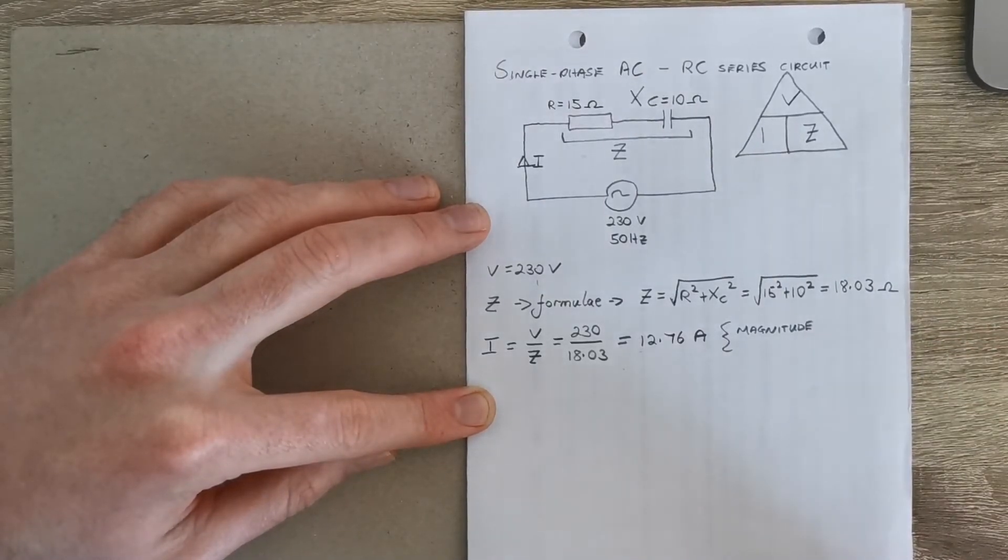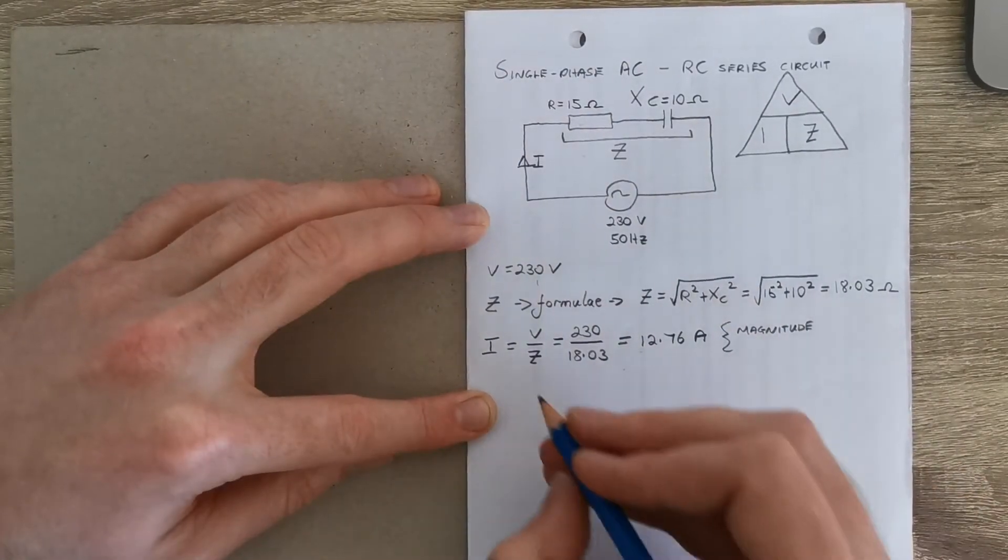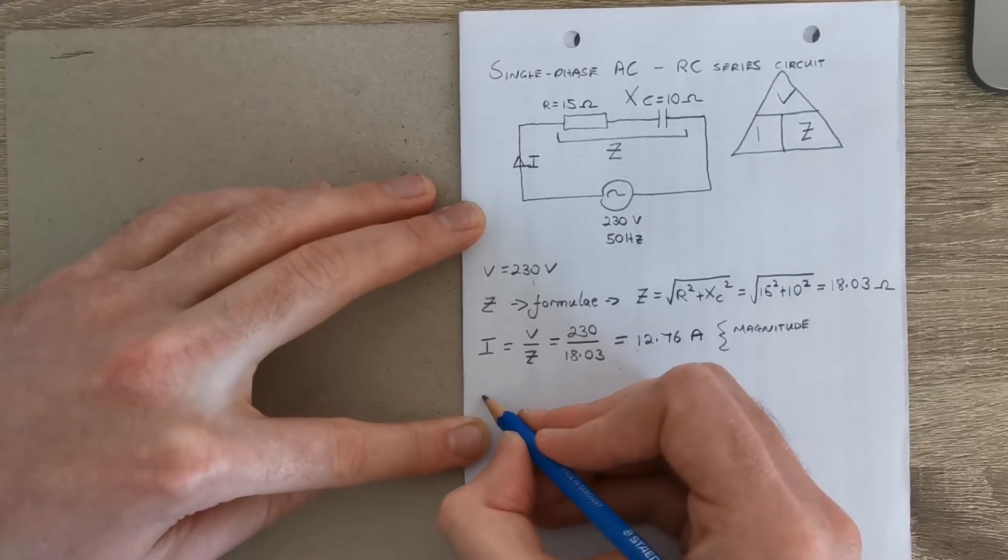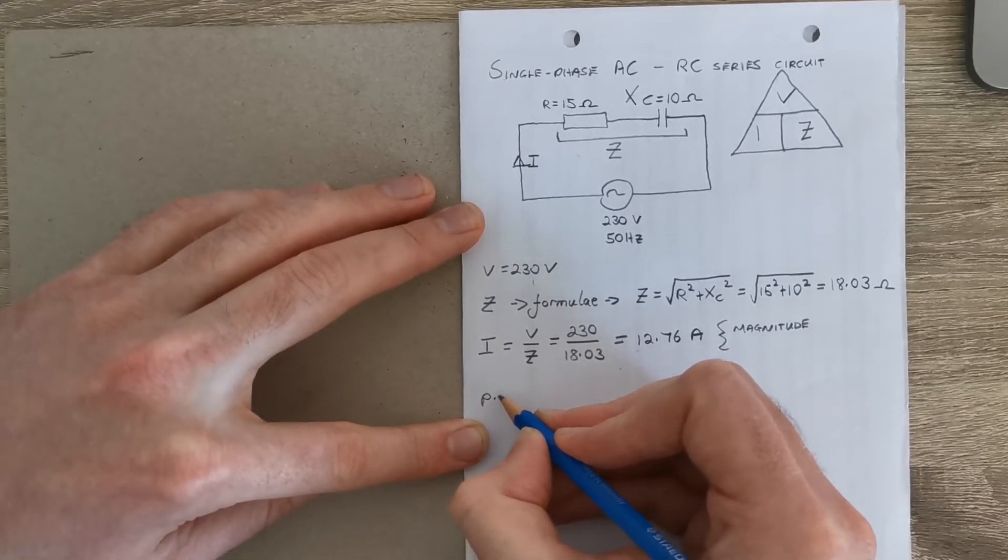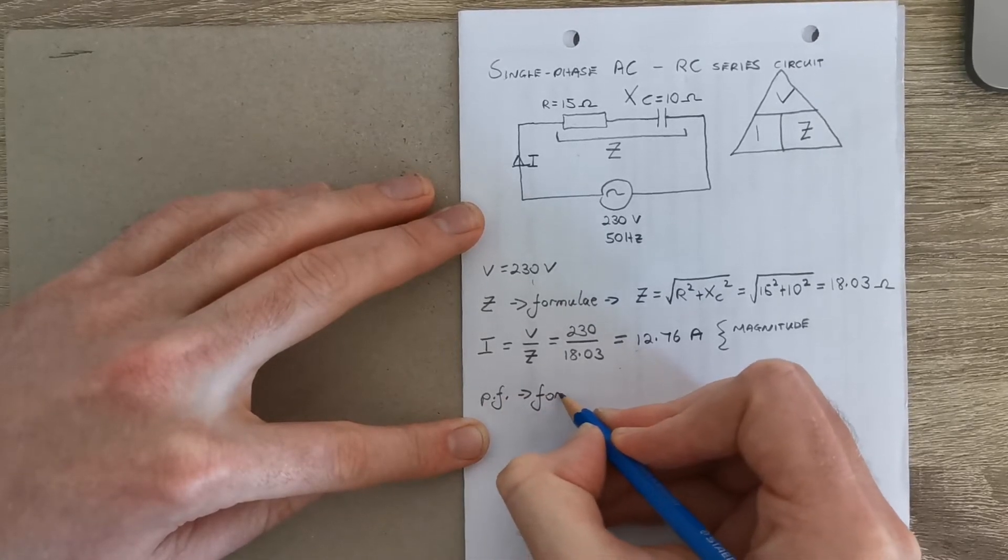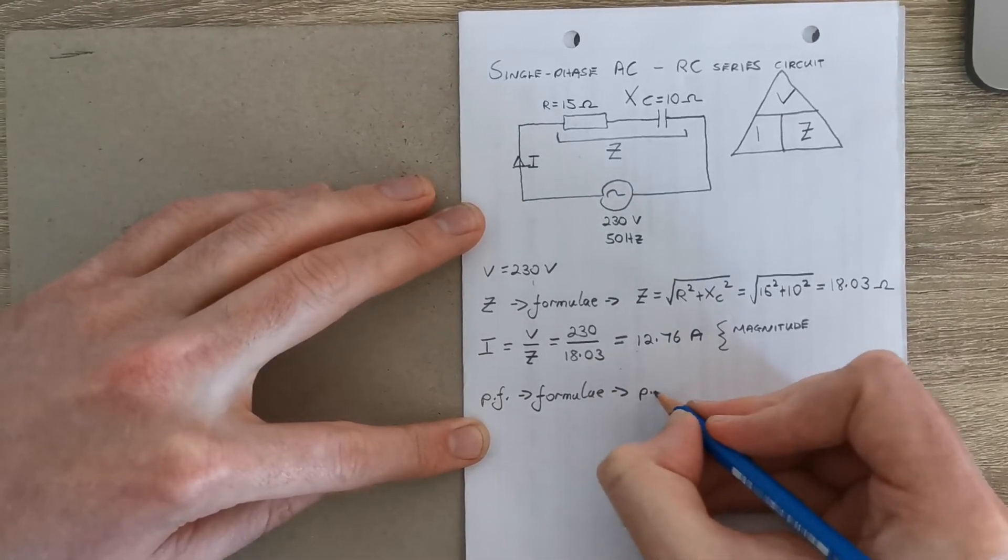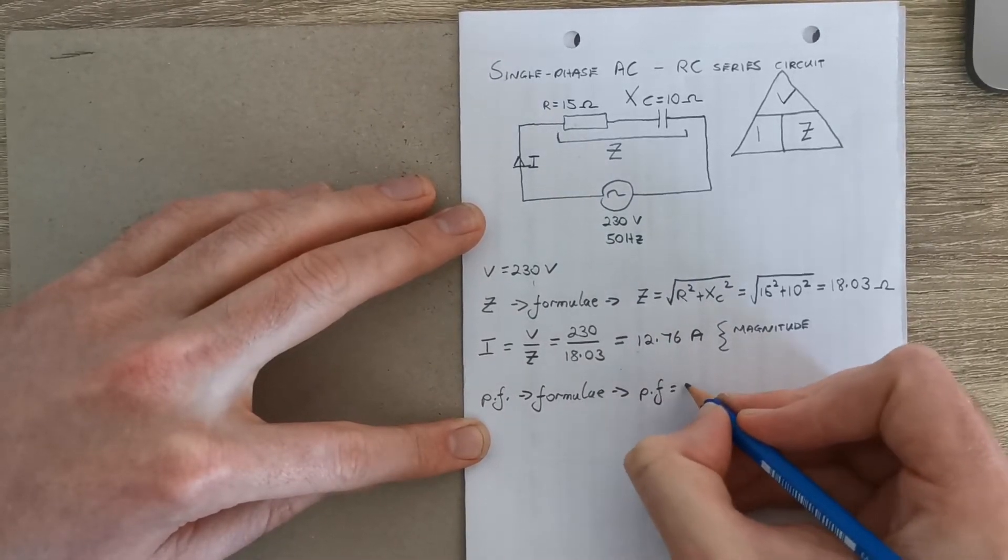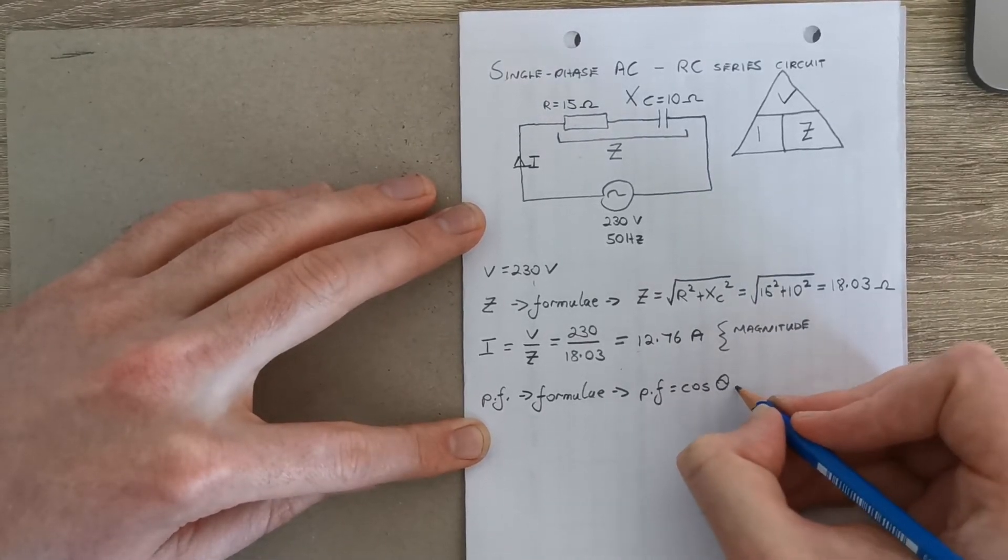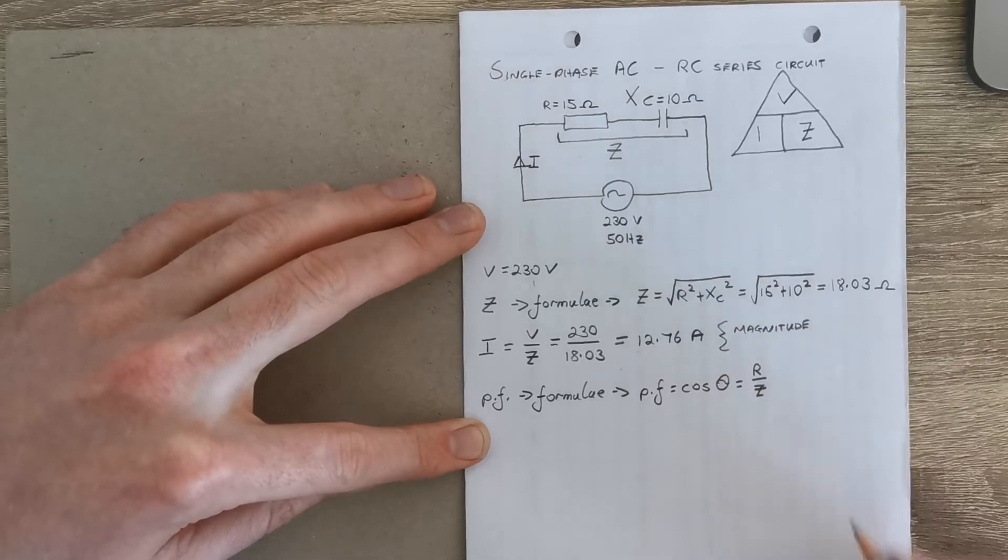So this is the magnitude of the current flowing in the circuit, but in our question we're also asked to work out what the phase is going to be. So if we want to get the phase, again from your formula relating power factor, if you look in your notebook of formula, you'll see that the power factor is equal to the cos of the phase angle theta, and that's also equal again to R over Z.